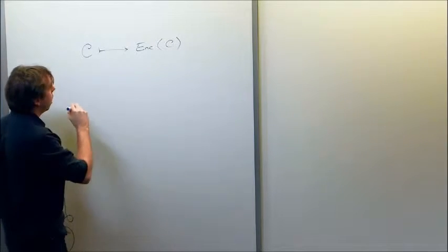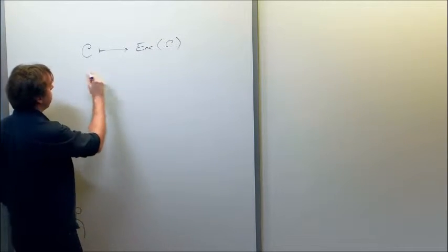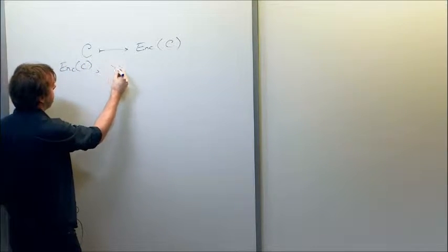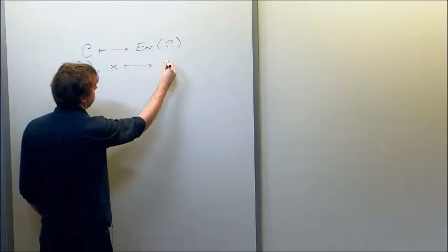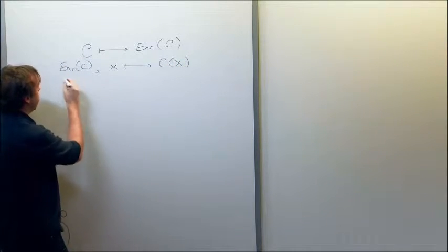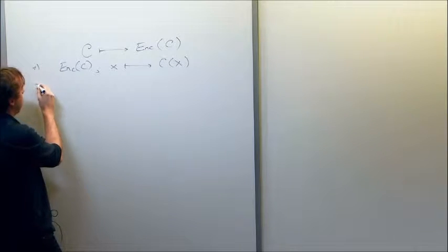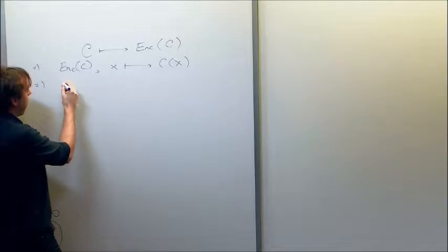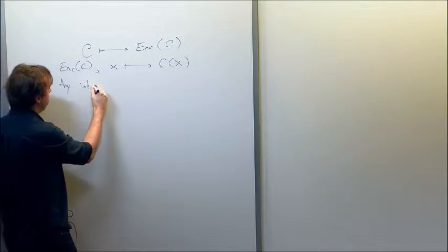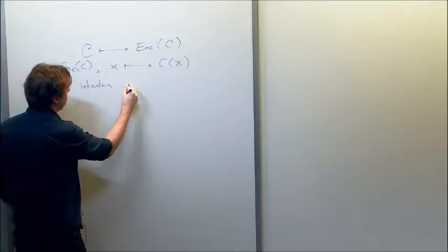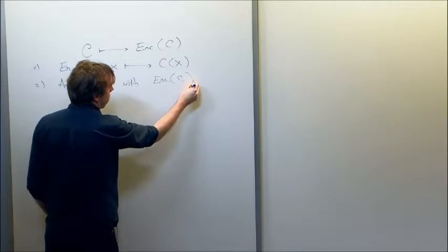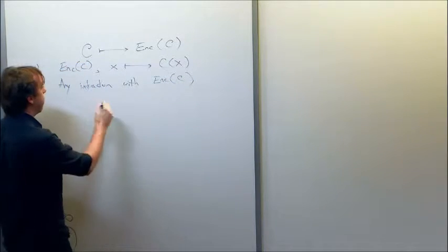Property one: given the encoding of C and some input X, I would like to be able to evaluate C at the input X. Property two: any interaction with this encoded circuit can be simulated using black box access to C.